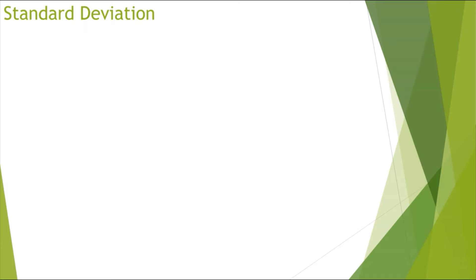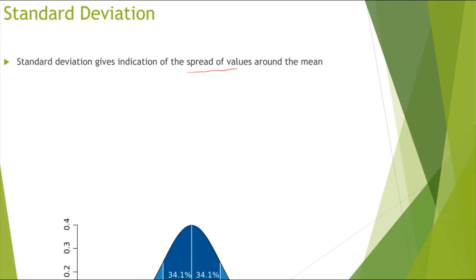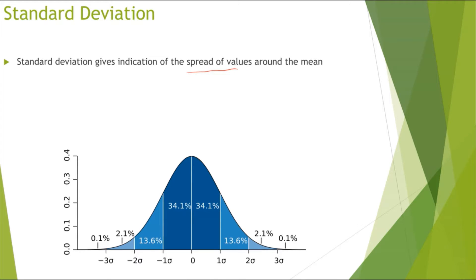First, looking at standard deviation. Standard deviation is basically an indication of the spread of values around the mean. For example, looking at this graph, the mean is this middle line and the standard deviation would tell me where my values are spread around the mean.